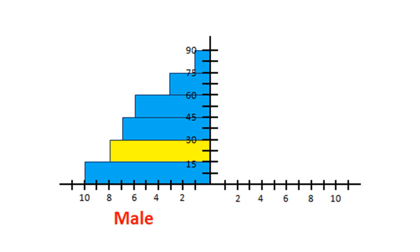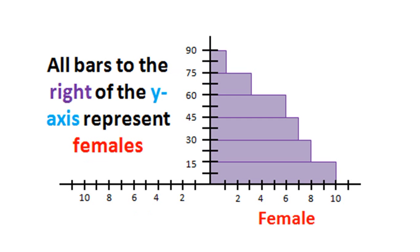The next bar up shows that 8% of the total population is made up of males between 15 and 30. Females are on the right side of the y-axis. Age structure diagrams are not necessarily symmetrical — you can have more males than females or vice versa in certain age groups or overall. Each bar on the female side also represents the percentage of the total population in that age group and gender. Combining both sides gives you a complete age structure diagram.